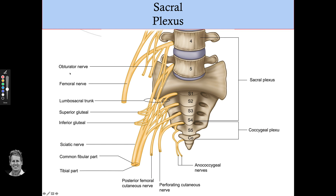We've already mentioned the obturator nerve and the femoral nerve. Think of the lumbosacral trunk along here, which forms part of the sciatic nerve. The superior gluteal nerve and the inferior gluteal nerve obviously supply the gluteal muscles.